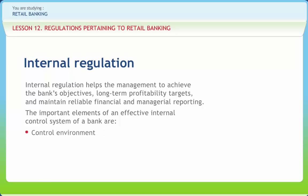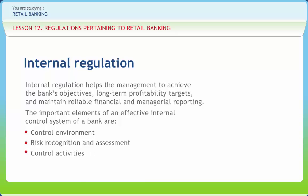The control environment affects the effectiveness of specific regulations and provides the background against which other controls are operated. An effective regulation system requires that all material risks, internal and external, controllable and uncontrollable, that could affect the achievement of the bank's objectives are recognized and continually assessed. Control activities are policies and procedures ensuring bank personnel follow management directives. Segregation and rotation of duties reduces opportunity for fraud and ensures detection of errors. The overall effectiveness of internal regulation should be monitored on an ongoing basis.